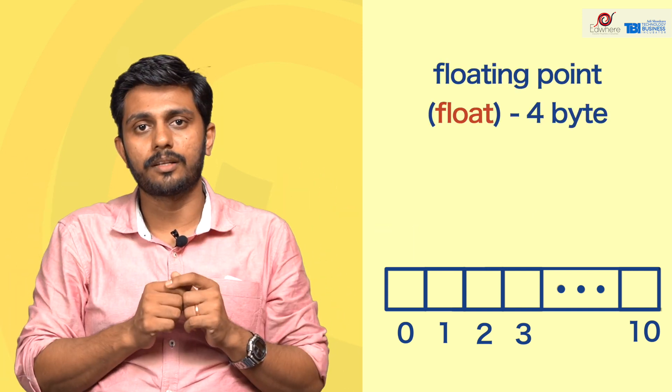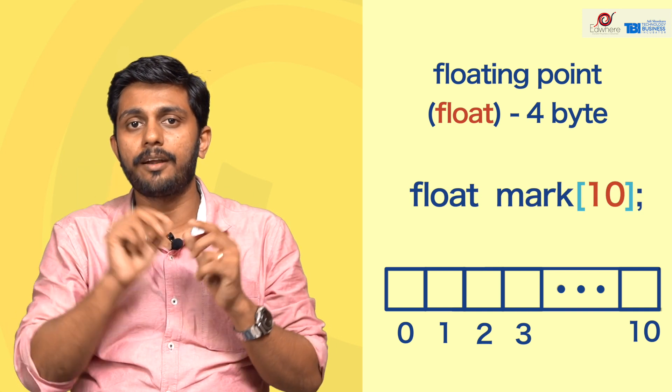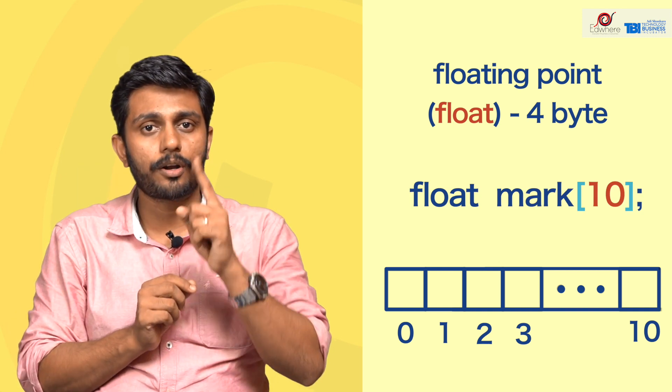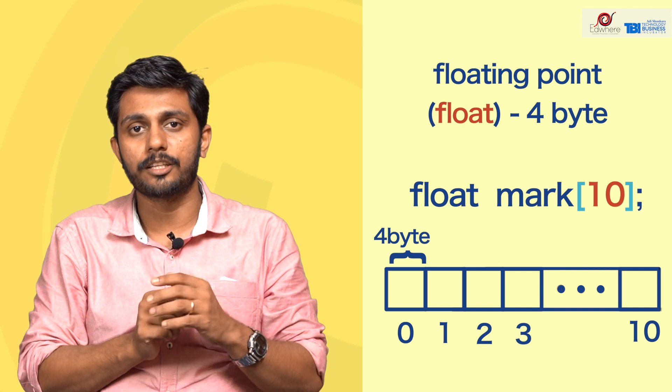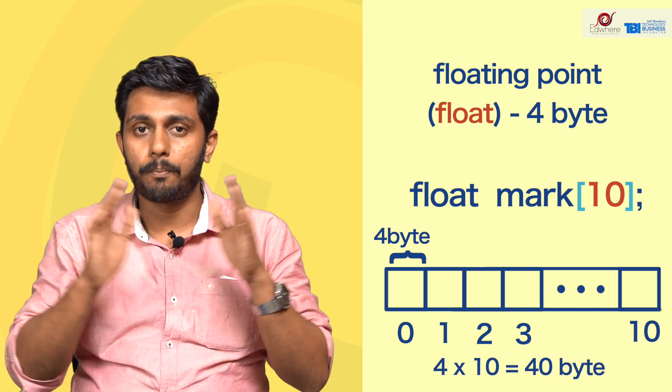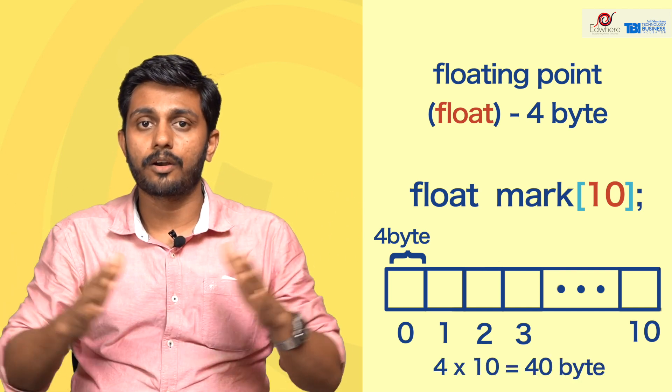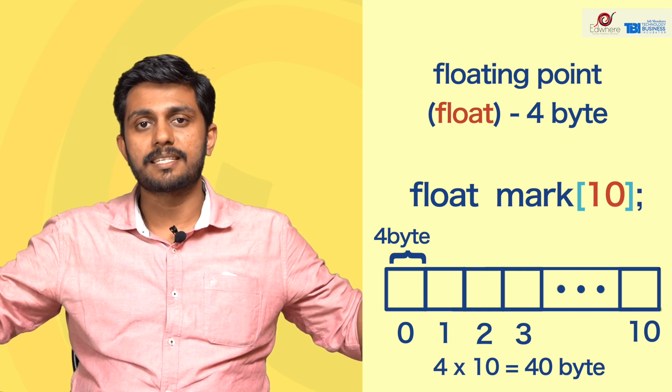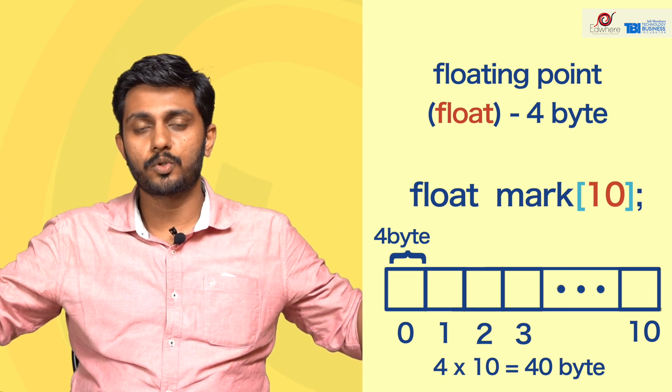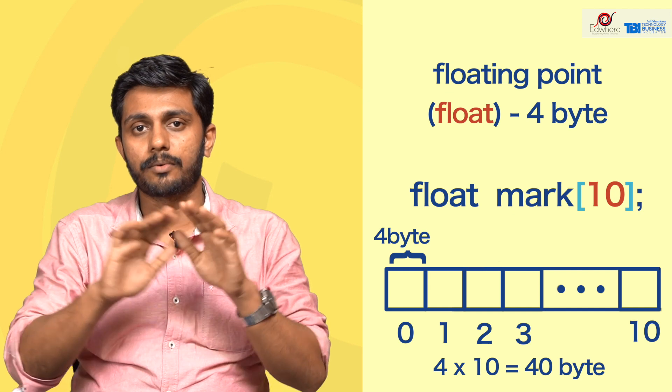If you want to allocate a float array, each float takes 4 bytes of space, and a total of 40 bytes of memory is allocated. So here is the array allocation mechanism. Dennis Ritchie proposed Arrays to allow us to allocate a large number of values efficiently in programming. This is what Arrays are.